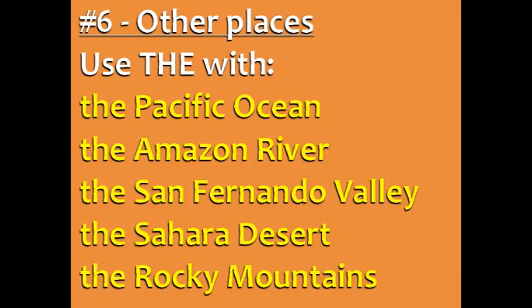Use 'the' with oceans, rivers, valleys, deserts, and mountain ranges — that's groups of mountains. For example: the Pacific Ocean, the Amazon River, the San Fernando Valley, the Sahara Desert, and the Rocky Mountains.